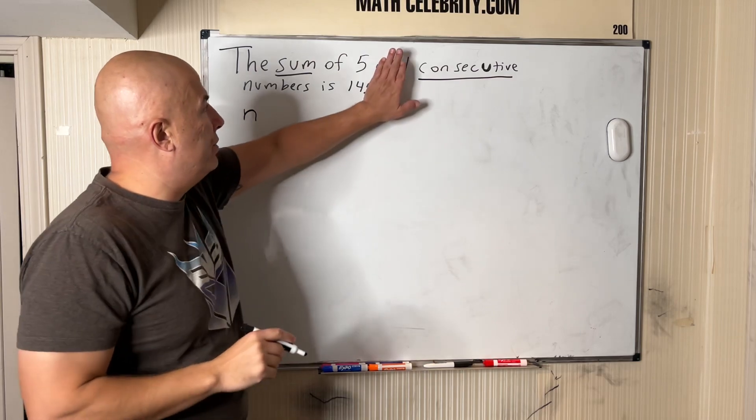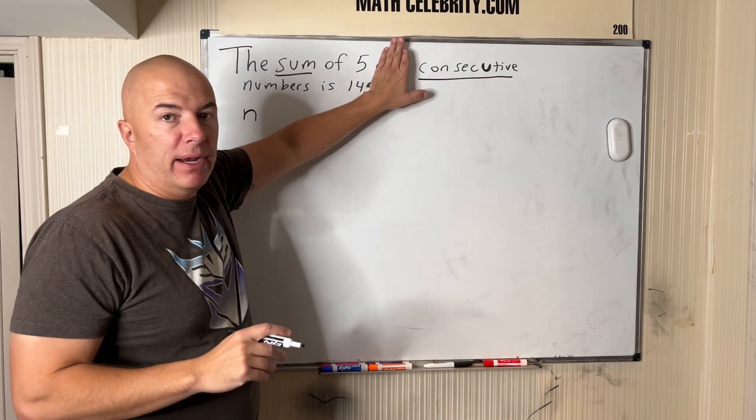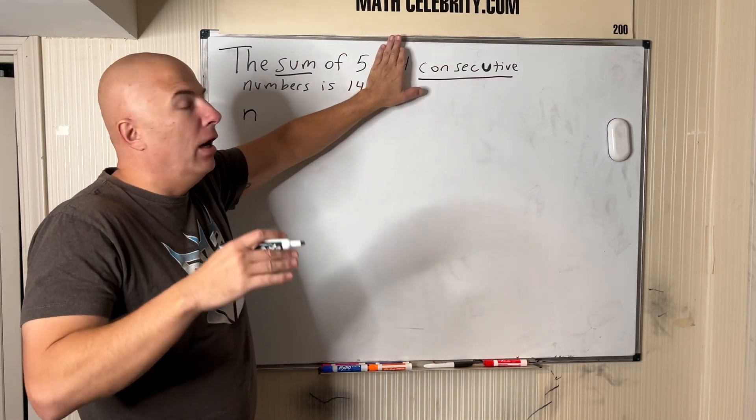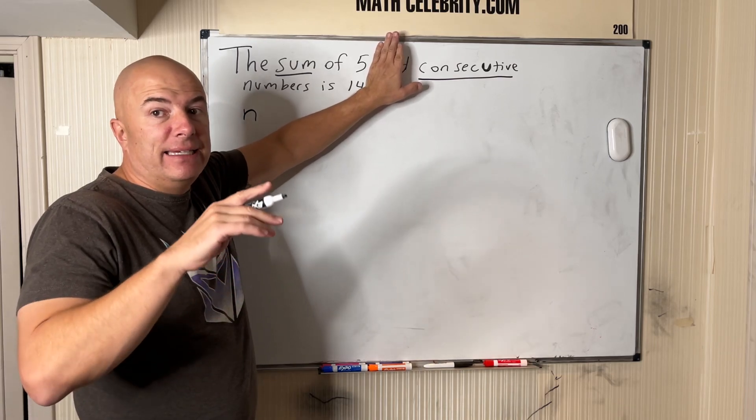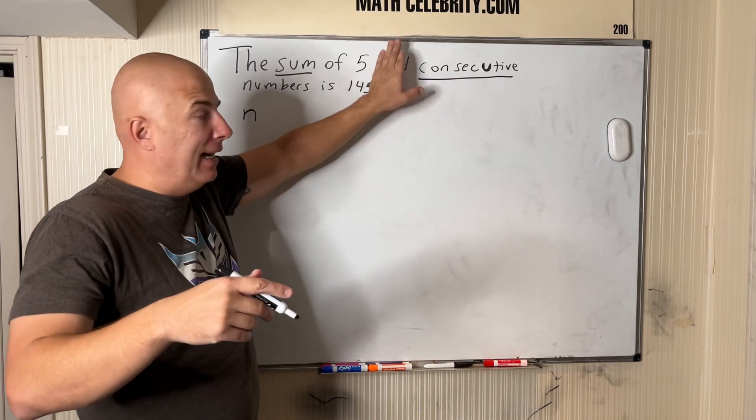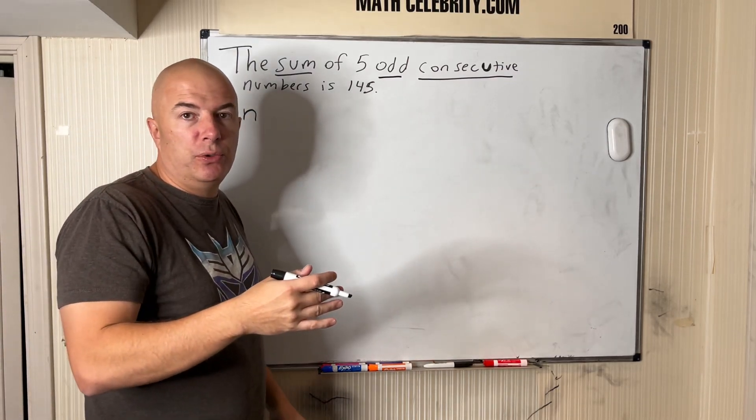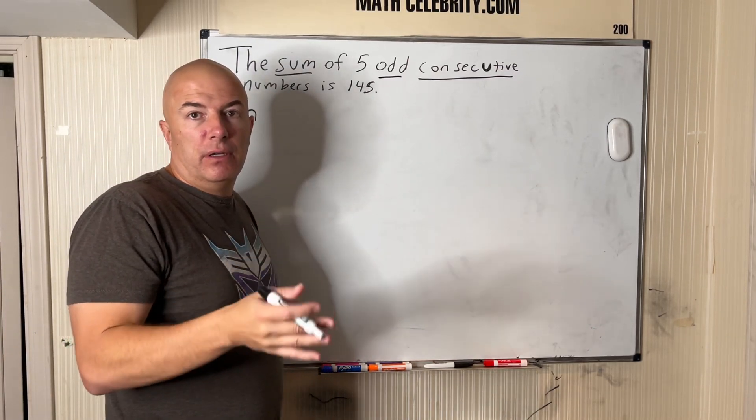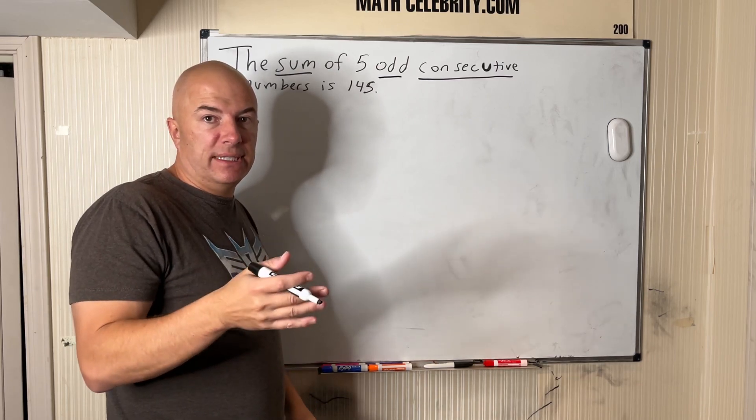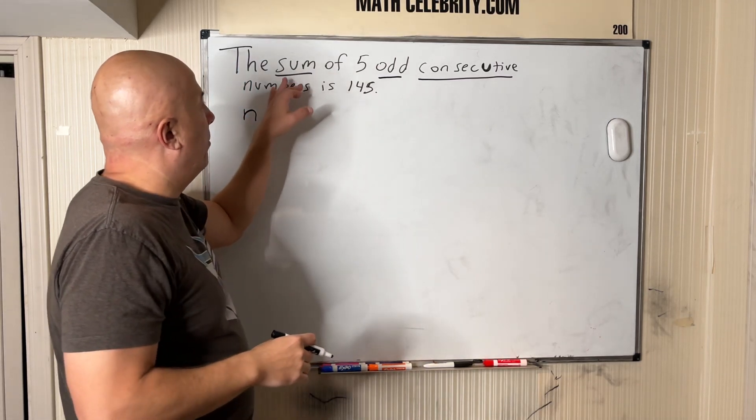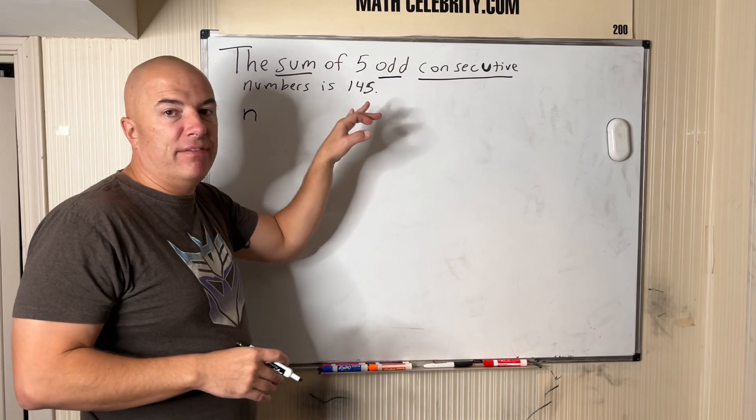Odd consecutive numbers is another clue. If it was just consecutive, you're adding one, right? Because three then four then five. But odd, it takes plus two to get to the next odd. So we're going to say n, and then it's n plus two, then n plus four, n plus six, n plus eight. But it's saying the sum of these five odd consecutive numbers equals 145.